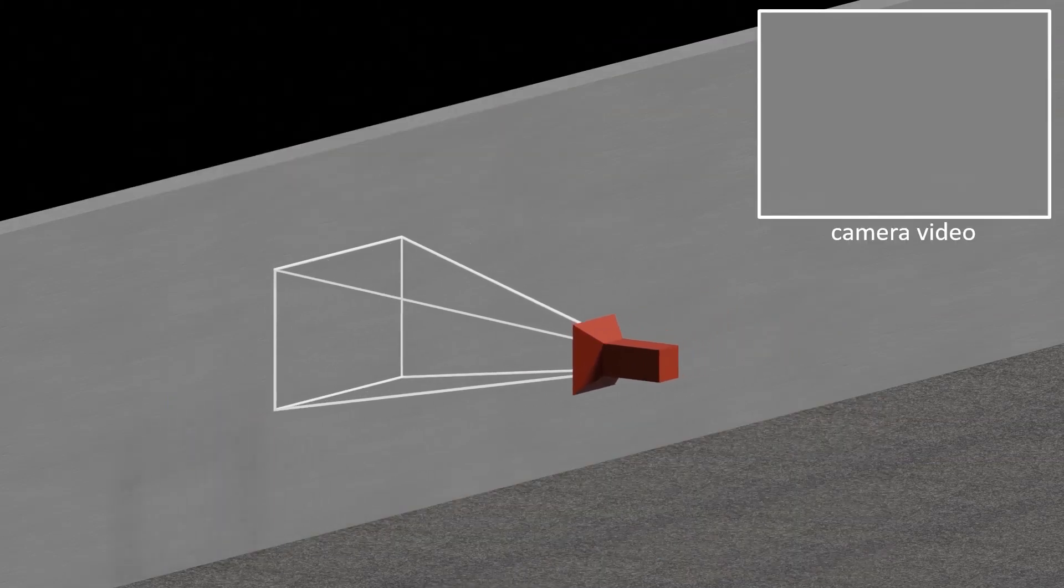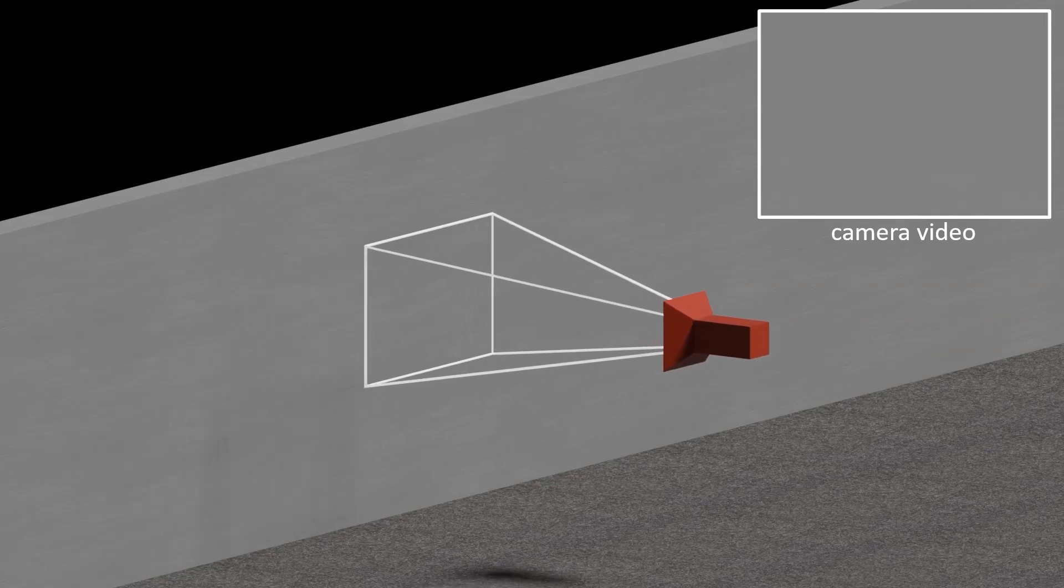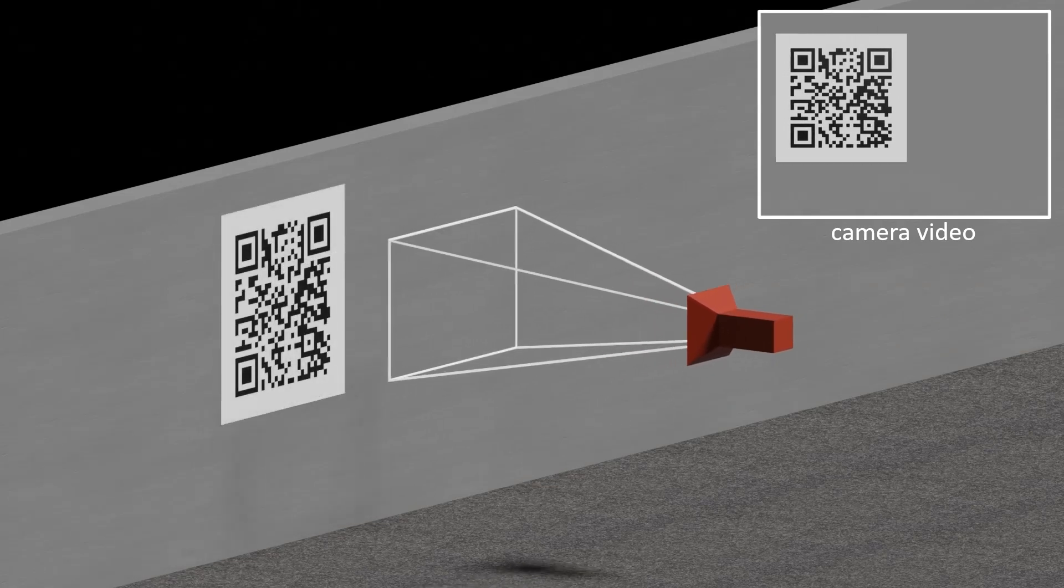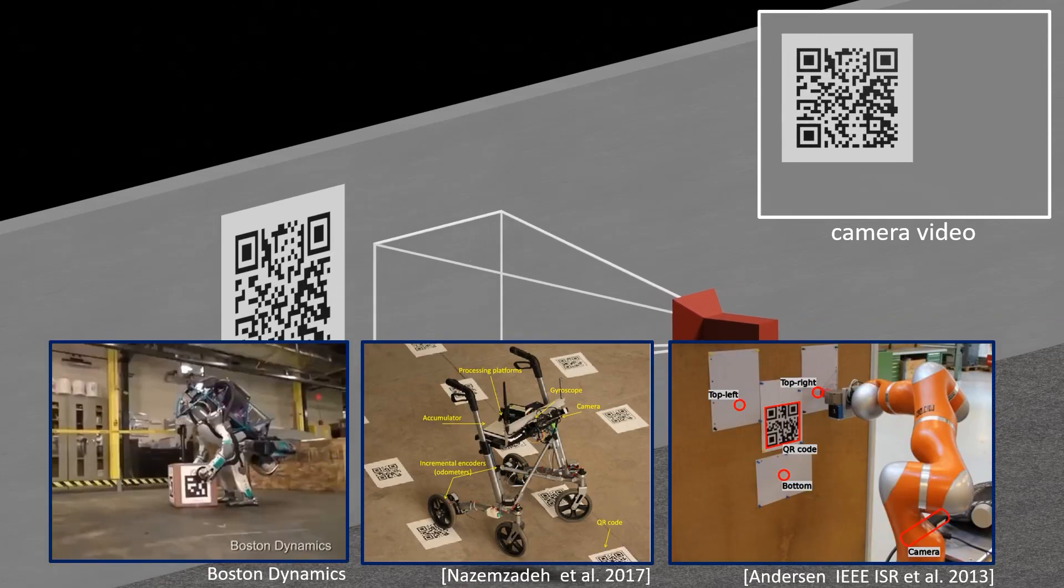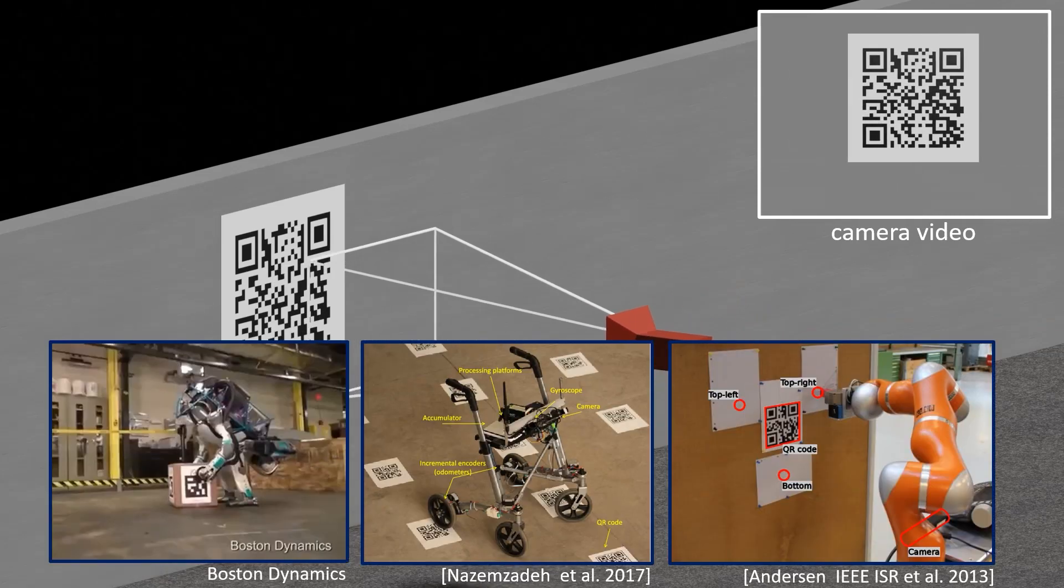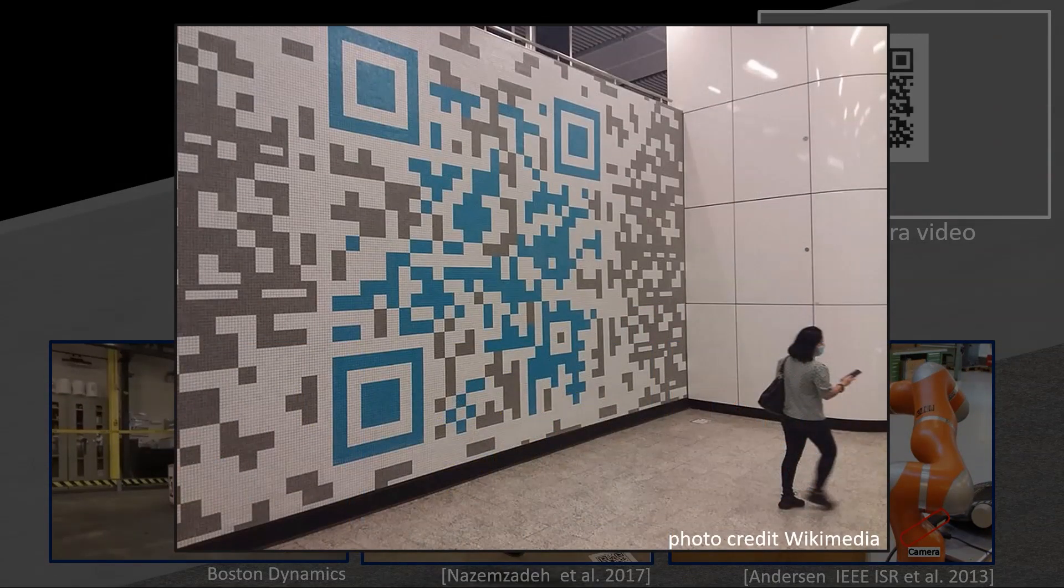In computer vision there are two ways of handling this problem. The first way is to physically add such patterns to the environment which can greatly help vision-based navigation and mapping. But tiling the real world with QR codes is not practical.